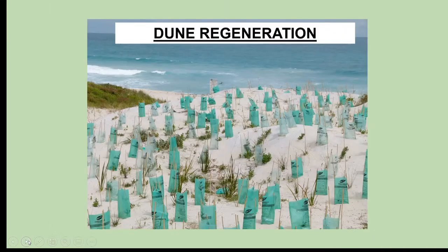This next one is called dune regeneration. It's similar to beach nourishment, but what you do is plant vegetation into the sand dunes behind the beach and fence off or rope off areas so people don't walk on them. This increases the strength of the sand dunes — the plants hold all the soil and sand together — and by stopping people walking on the dunes you're preventing erosion, since people cause erosion with their feet. Roping off areas and creating proper pathways stops people eroding the land.